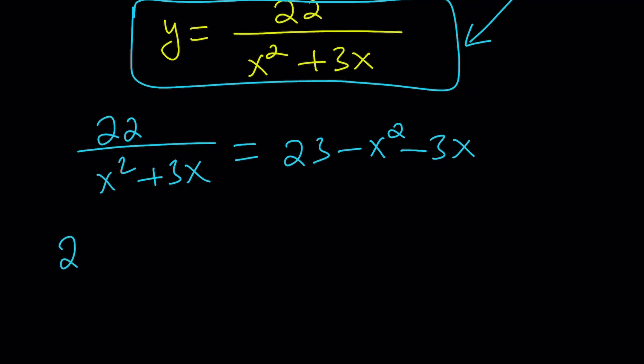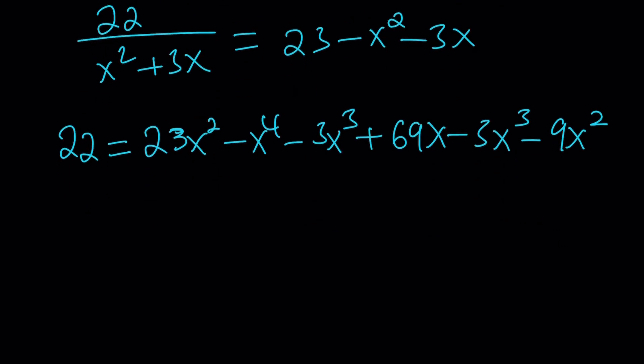So if you cross multiply, you're going to get 22 equals x squared. Let's distribute the x squared first. 23x squared minus x to the fourth minus 3x cubed. And then let's distribute the 3x plus 69x minus 3x cubed minus 9x squared. I have x to the fourth.